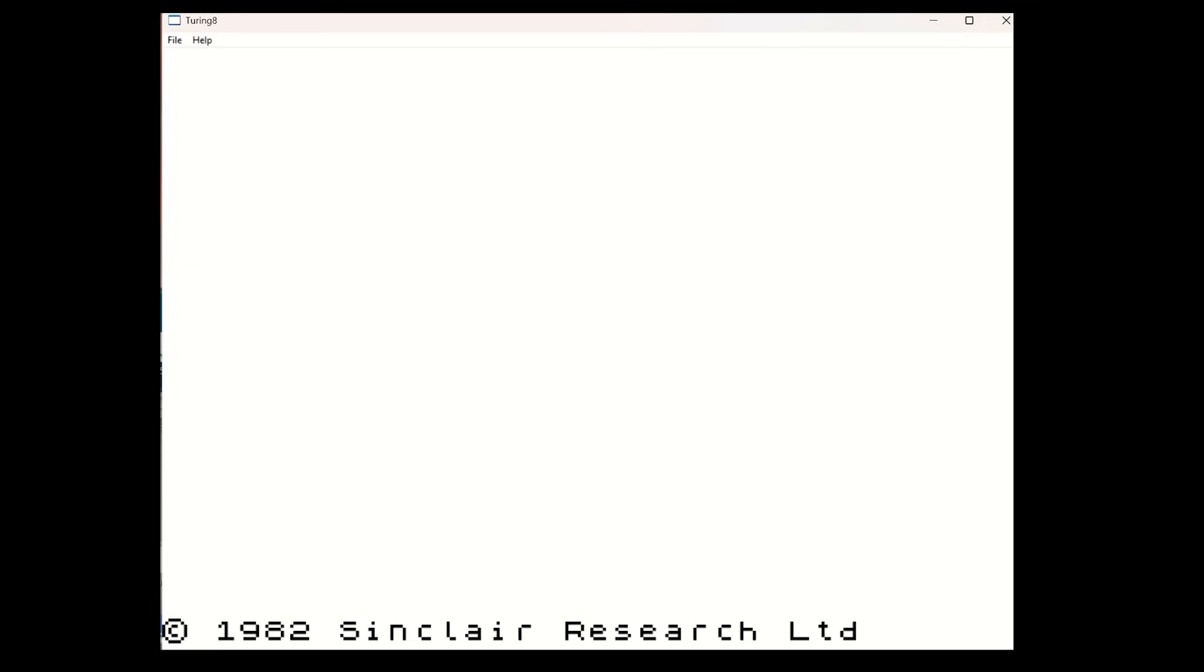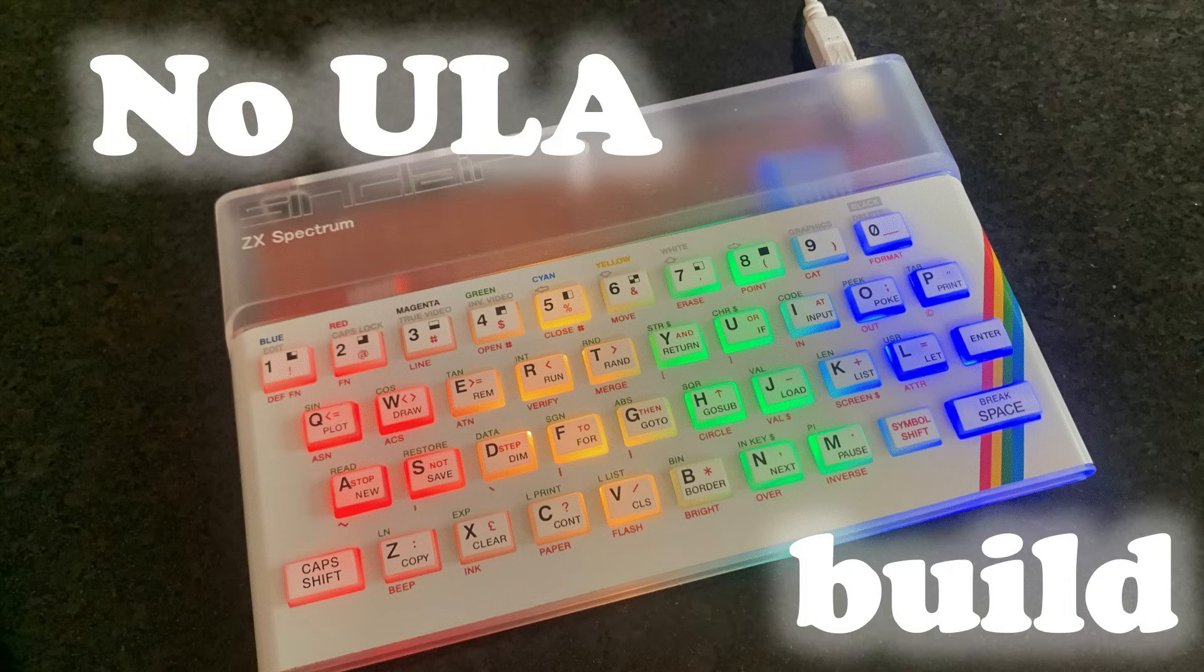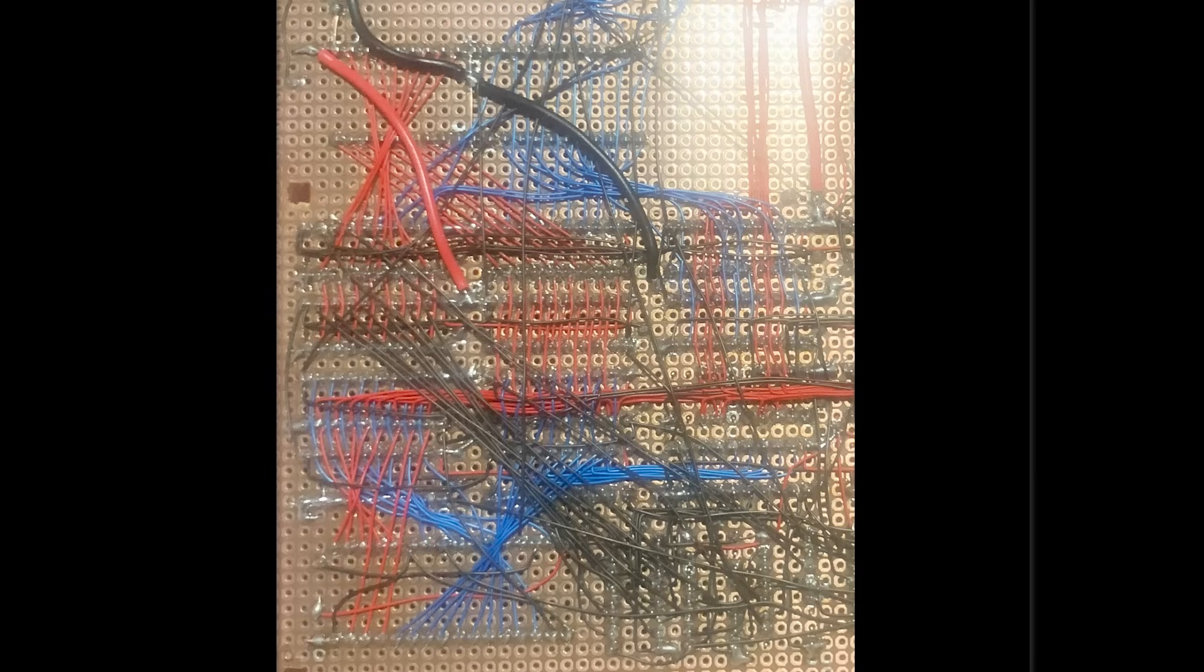In the next video, I'm going to add on the raster generator, which is basically the same as the raster generator from the ZX Spectrum No ULA playlist. So let's see if I can get the whole machine to run at speed in the next video.